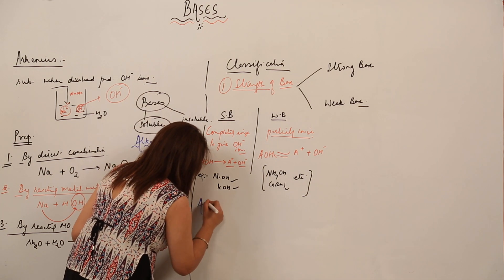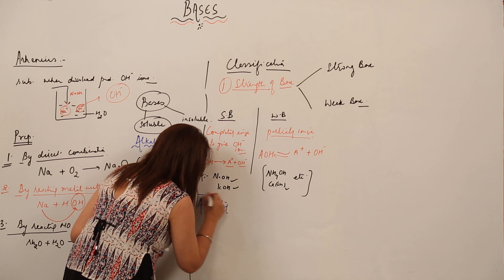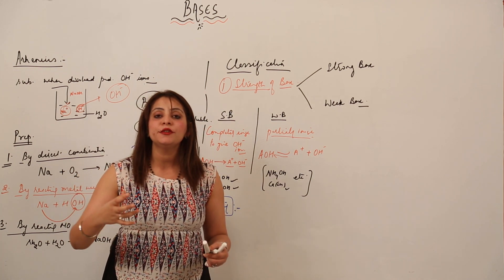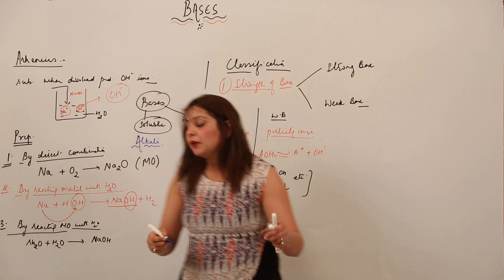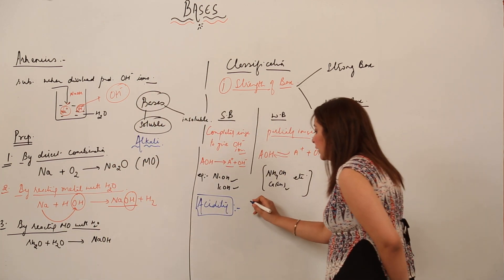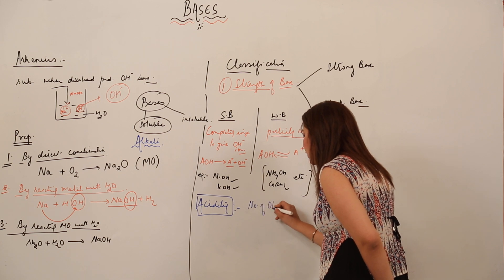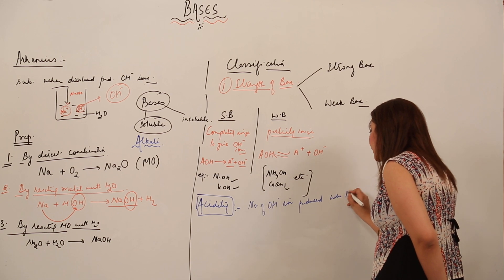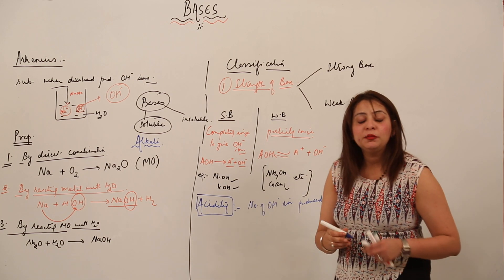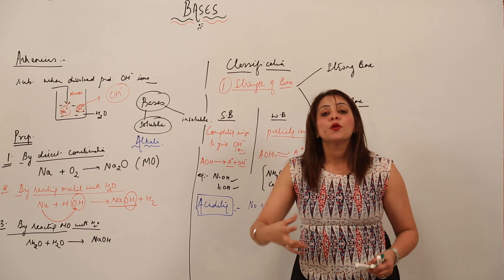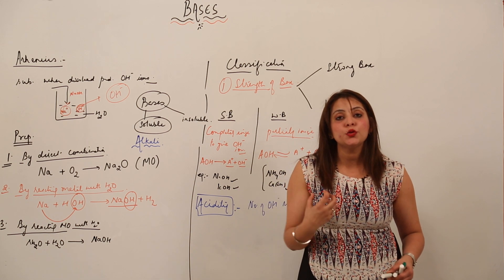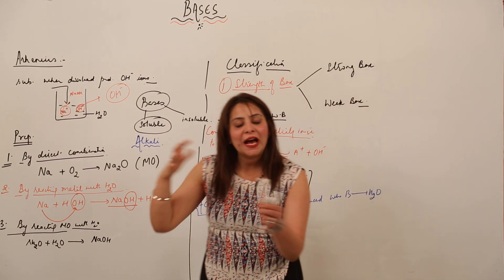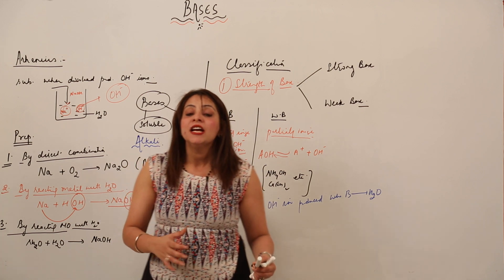Now we have the term 'acidity' for bases — just as we had the term 'basicity' for acids. Acidity of a base means the number of hydroxide ions produced when the base is added to water. The number of hydroxide ions produced indicates the acidity of the base. Basicity is for acids; acidity is for bases.